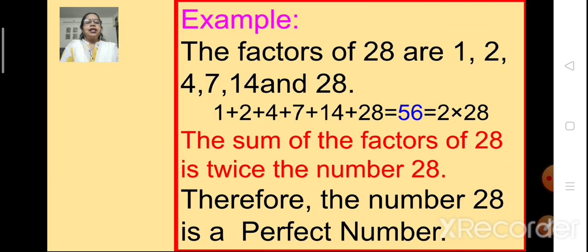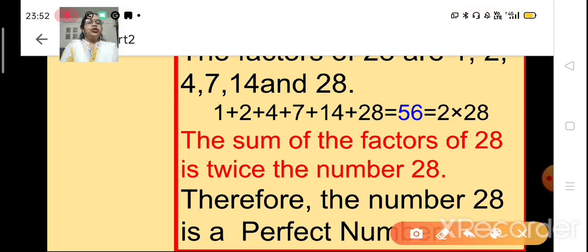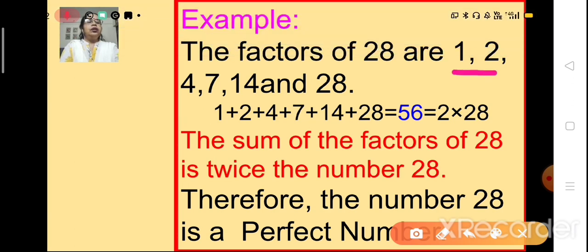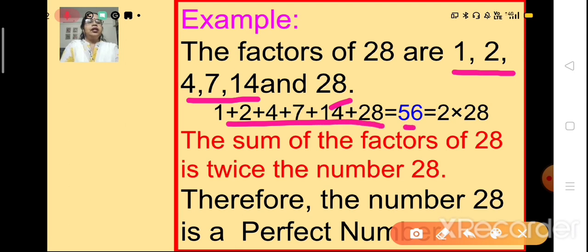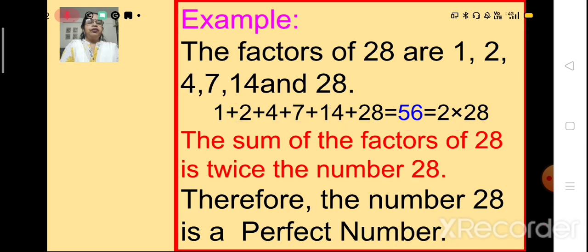Let's take one more example. The factors of 28 are 1, 2, 4, 7, 14 and 28. When we add all these factors of 28, we get 56. And 56 is nothing but 2 times 28. So the sum of the factors of 28 is twice the number 28, therefore 28 is also a perfect number.